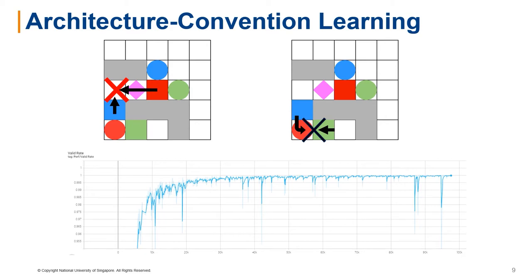A metric called valid rate keeps track of the fraction of valid actions. While the valid rate starts out low during training, agents are eventually able to adhere to conventions and achieve a near-perfect valid rate.